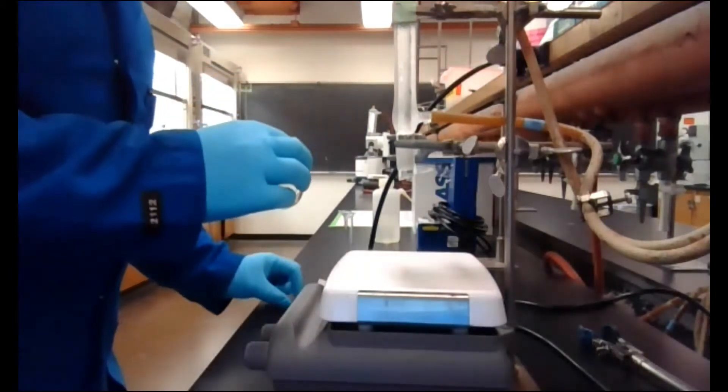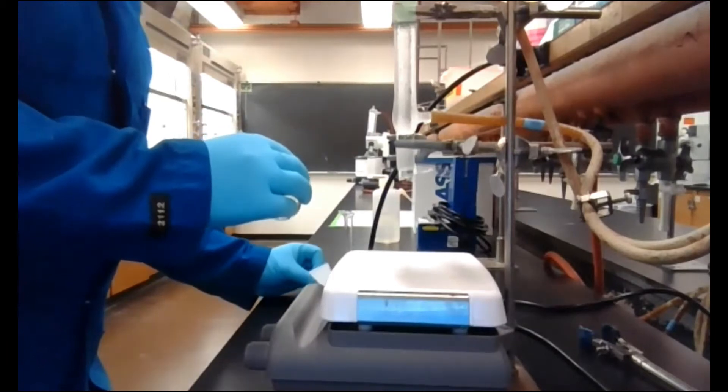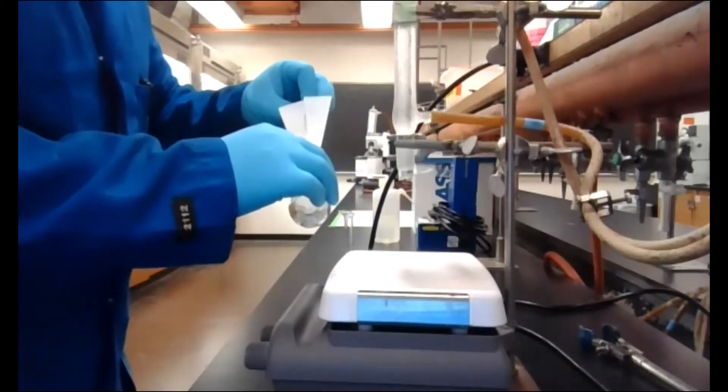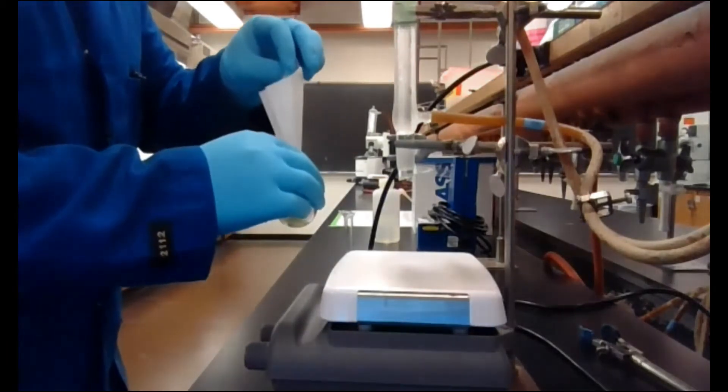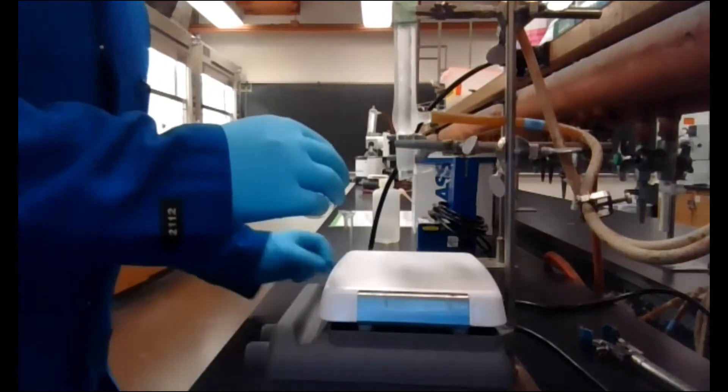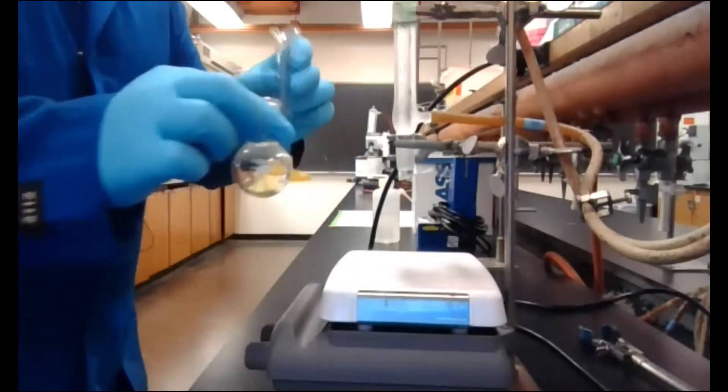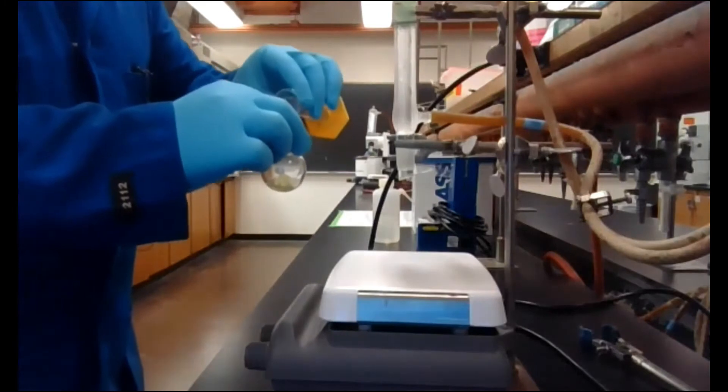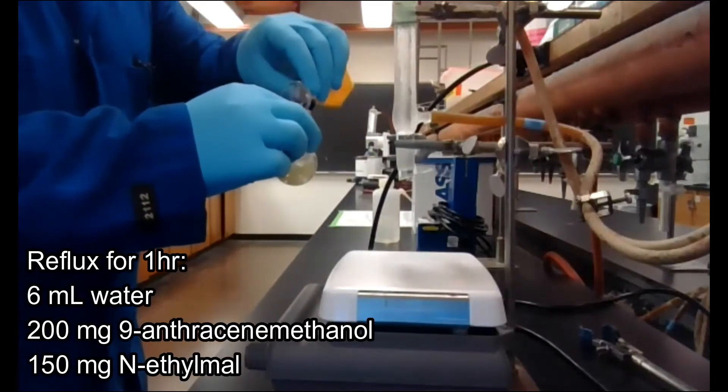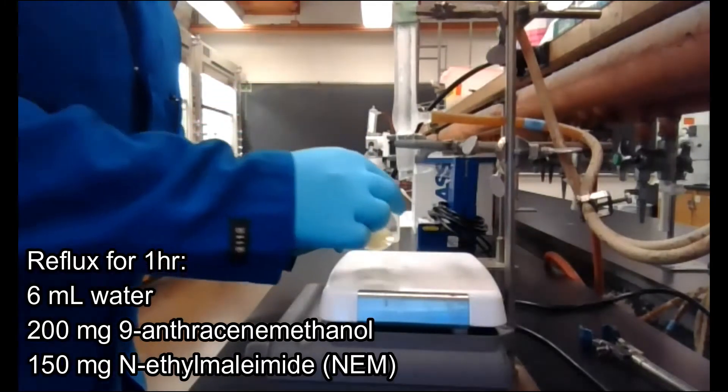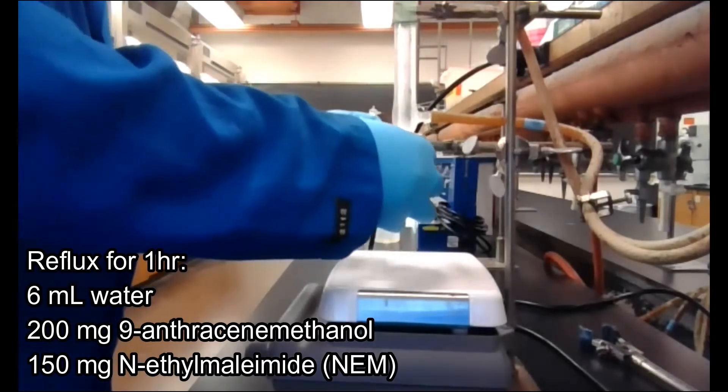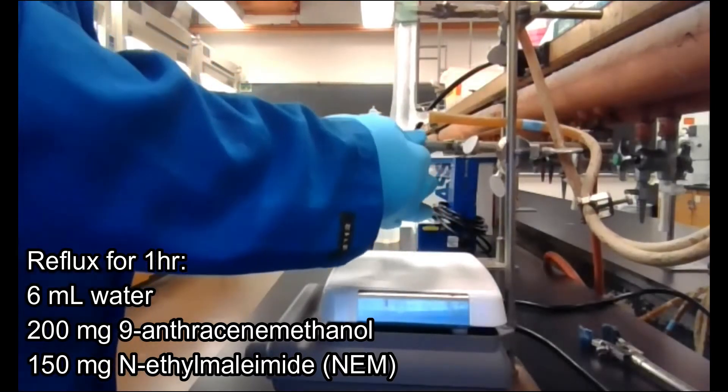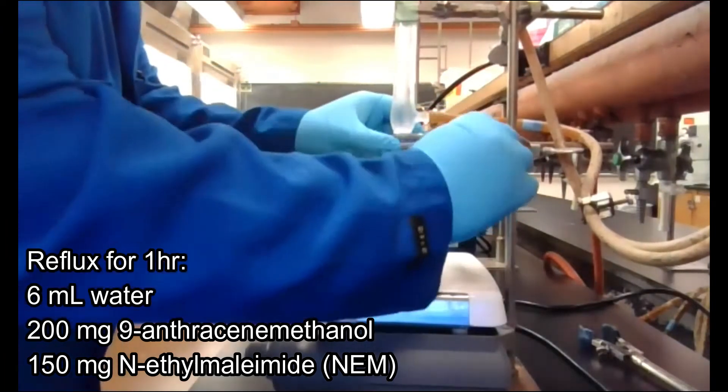To this, I'm going to go ahead and add 200 milligrams of the 9-anthracene methanol, and six mils of water, and we're going to hook this up to our reflux condenser, clasp it in with that clip.